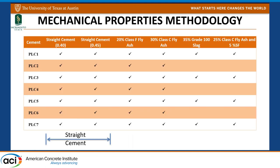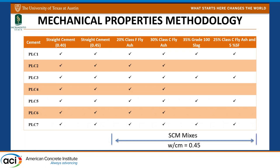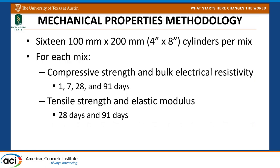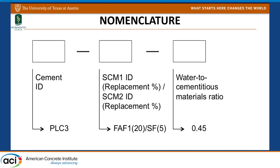In total we cast about 42 mixes. The first two columns show straight cement mixes at two different water-to-cement ratios including 0.45, and then we did all of the SCM mixes at a water-to-cement ratio of 0.45, covering all SCMs at different dosage levels. For every single mix we cast 16 cylinders and tested compressive strength and bulk electrical resistivity at four different ages, and tensile strength and modulus of elasticity at two ages.